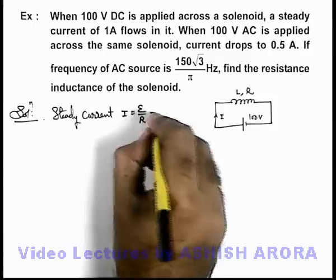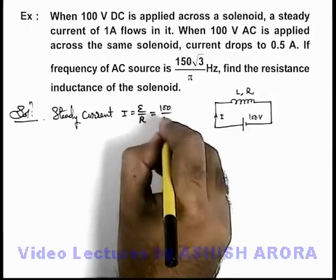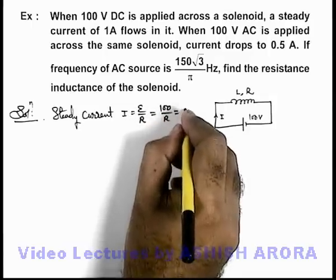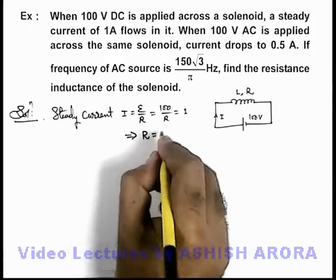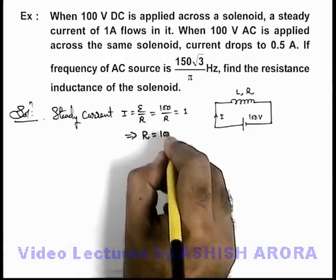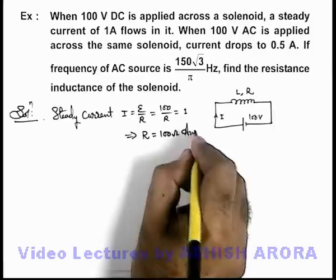Here the value of steady current can be simply written as E/R, so this must be 100/R which is equal to 1 ampere. This implies the value of resistance of the inductance coil can be directly written as 100 ohms. That will be the answer to this problem.